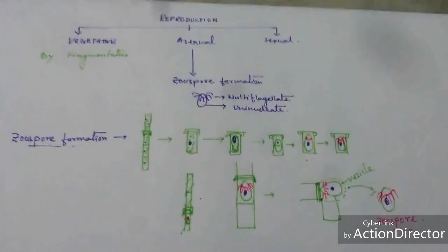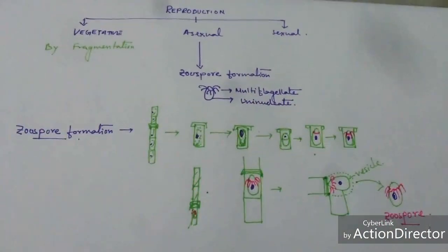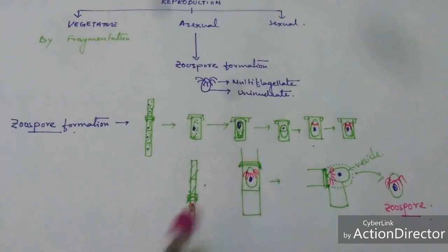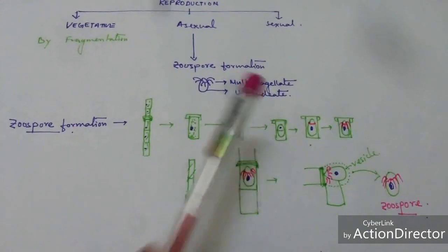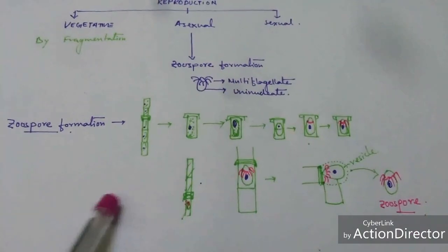So this is all about asexual reproduction of Oedogonium and the formation of zoospores.